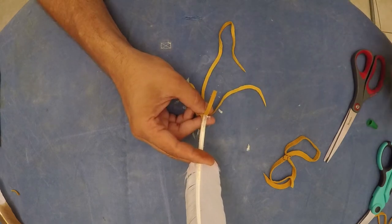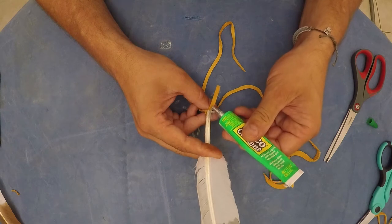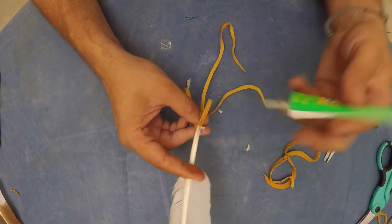Now take the other thinner strip of leather and repeat the same process for gluing down the leather to the quill. These two thinner strips of leather that you are gluing down will be the ties to the spirit feather.